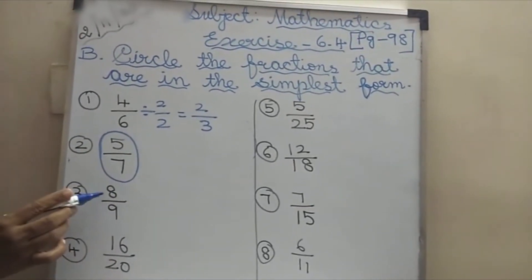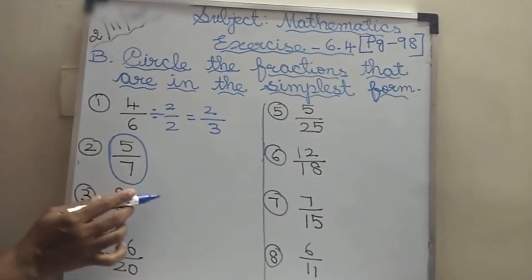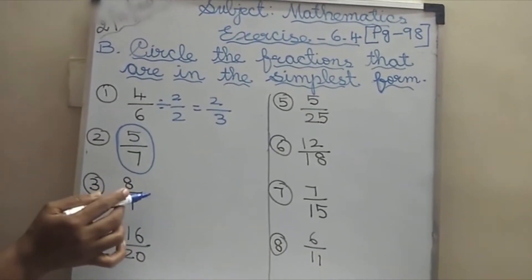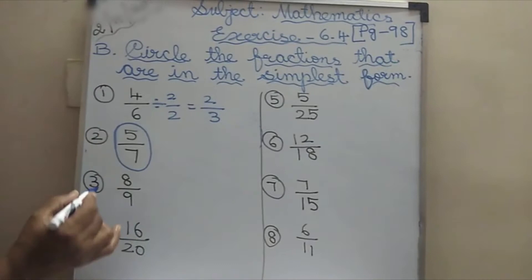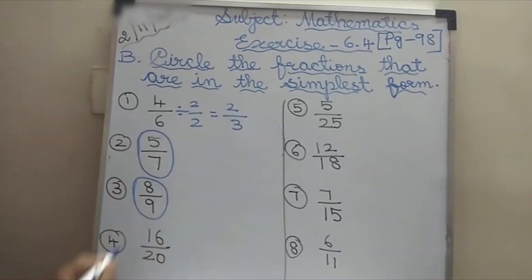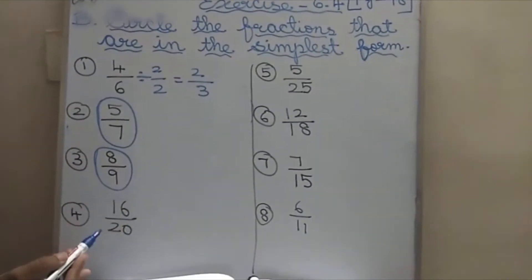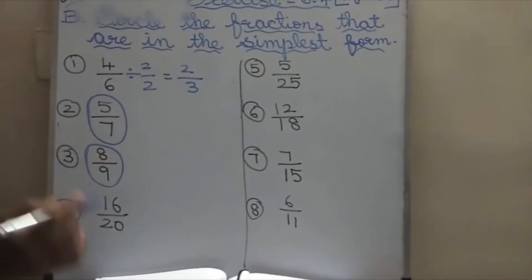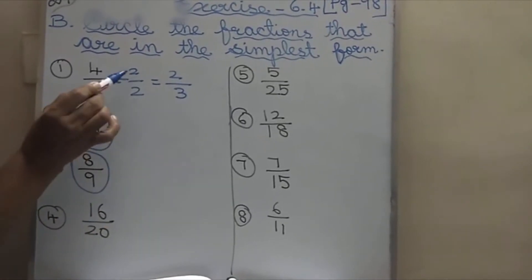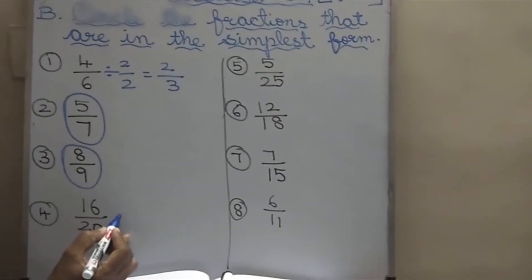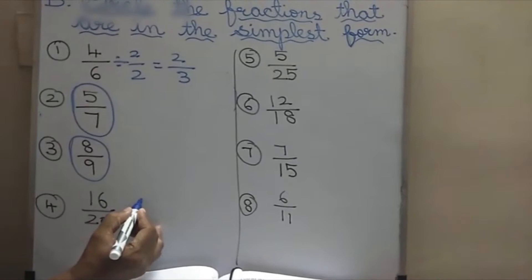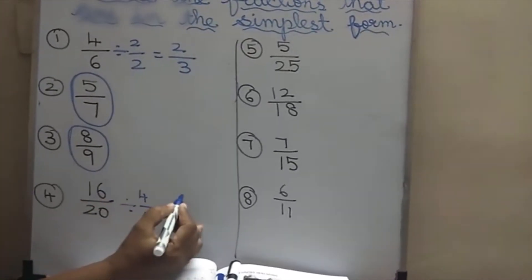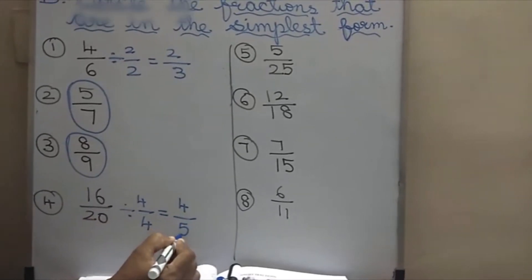Likewise, 8 by 9 — 8 goes in 8 tables and 9 goes in 9 tables. In 8 tables, 9 will not go. So you can't divide further — this is also the simplest form. And here, 16 by 20 — 16 and 20 will go in the same tables: 4 by 4. 4 4s are 16 and 5 4s are 20.